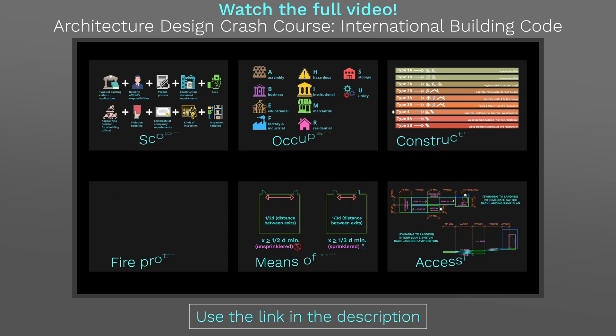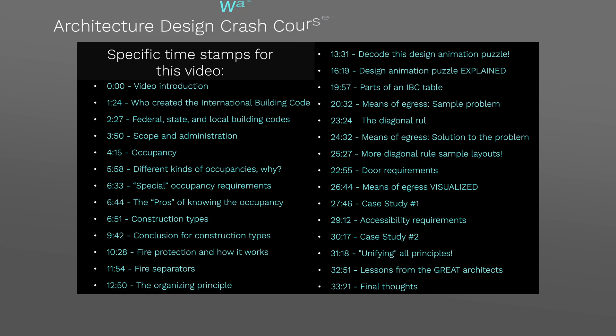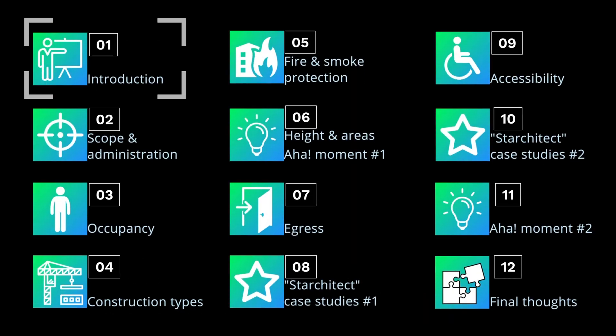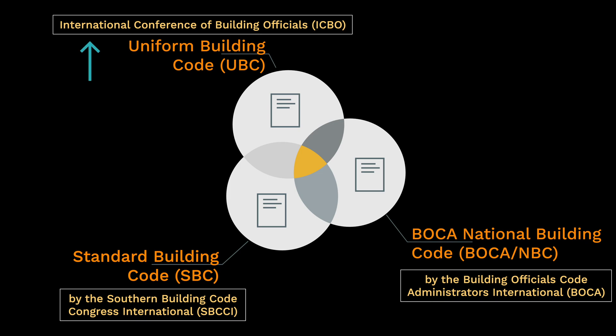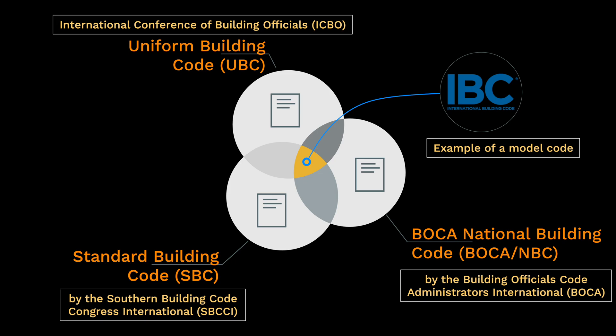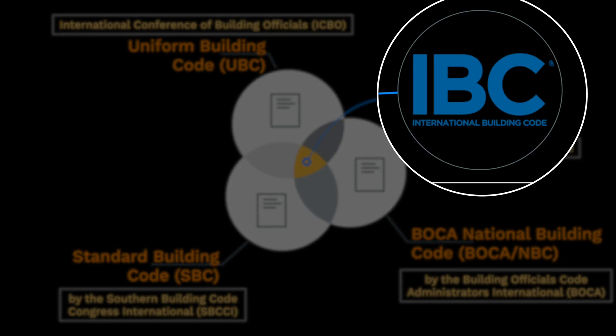Let's first talk about the introduction. Before, there were three building codes created by three different organizations. The ICBO made the Uniform Building Code, the SBCCI wrote the Standard Building Code, and the BOCA generated the BOCA National Building Code. These organizations decided to combine their codes to form a single unified building code, and that became the International Building Code. For this entire video, I'll refer to this as the IBC.